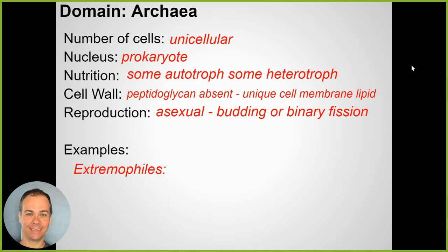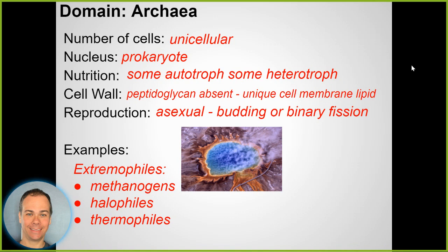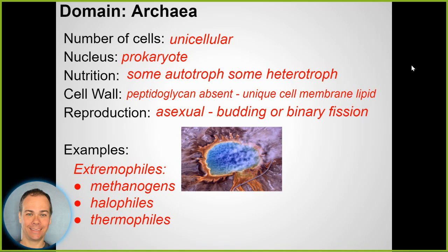Archaea typically reproduce asexually through a process called binary fission - splitting in two. Some of them are extremophiles that can live in extreme conditions - places where scientists previously thought nothing could survive: super hot areas, super salty environments, like geysers with boiling hot water and chemicals coming out of the ground. When scientists looked closely, they found some organisms can live in these very extreme environments.